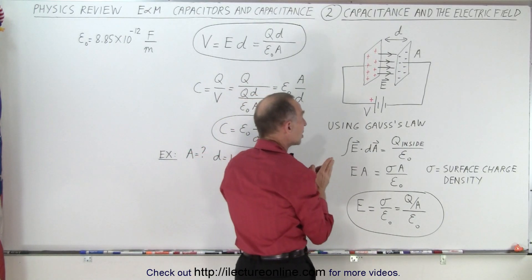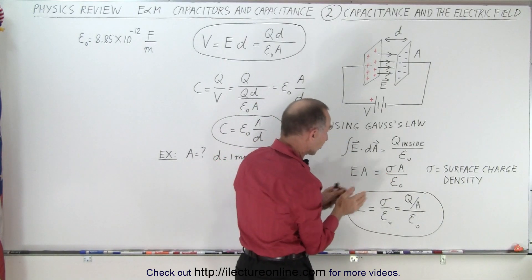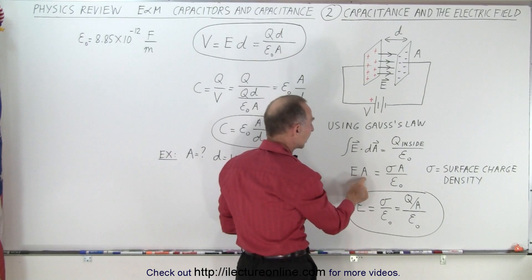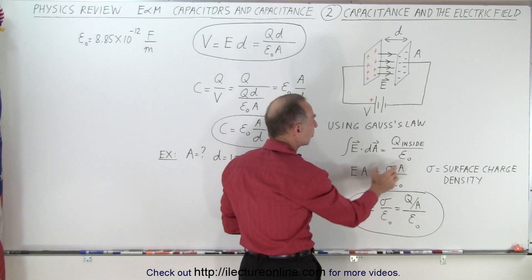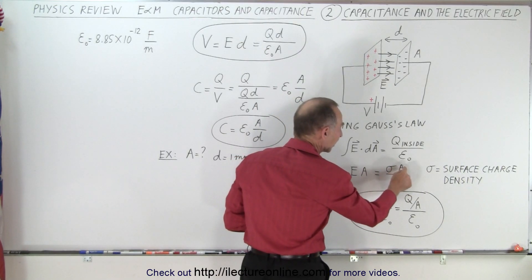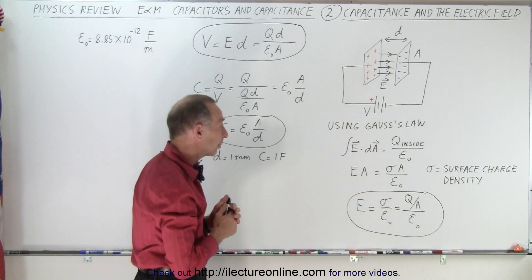Well, E dot dA, since the direction of the electric field and the perpendicular to the surface is in the same direction, we can simply write it as the electric field times the total area of the plates is equal to, and instead of saying Q inside, we can write it in terms of the surface charge density sigma times the cross-sectional area of the plate divided by epsilon nought.